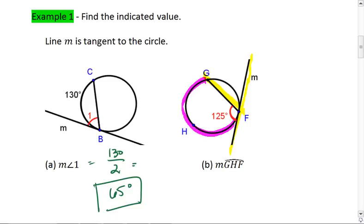If the angle is 125, then the intercepted arc needs to be twice that, which would make it 250. Thus, the measure of arc GHF is 250 degrees.